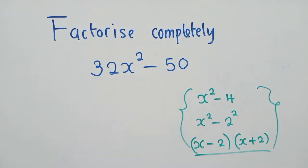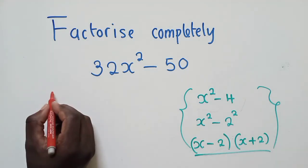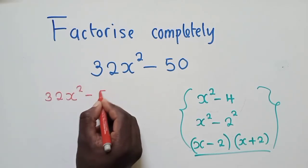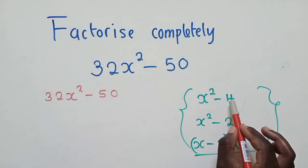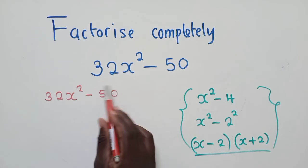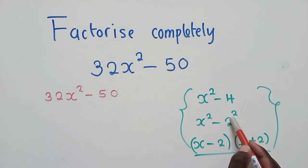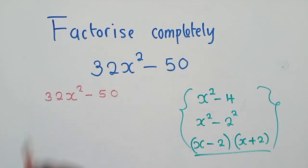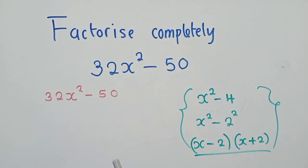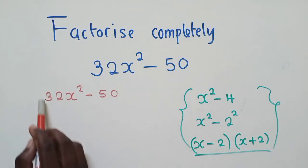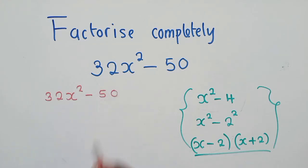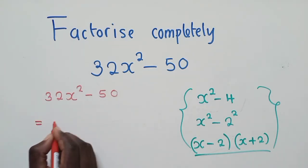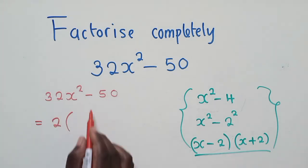And this is the idea we need to apply to answer the question. So let's check — we have 32x² minus 50. Now, we said we have to make all the bases have power 2. We need 32 and 50 each to be a perfect square. Can we find a number that squares to give 32? No. Square root of 32? No. Square root of 50? No. So what are we going to do? We're going to factor out a 2, because 2 goes into both 32 and 50.